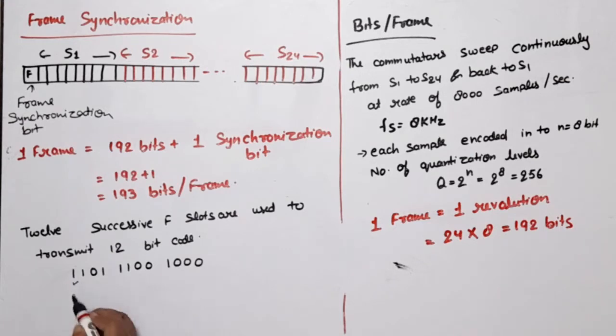After 12 frames, we repeat the code, which is 1101 1100 1000. This is the fixed pattern of the synchronization bit. For example, in the first frame F value is 1, second frame is 1, third frame is 0. When the 12th frame is transmitted, the 13th frame again starts with 1. This repeats every 12 frames. This is used to establish synchronization at the receiver. This is the function of frame synchronization.